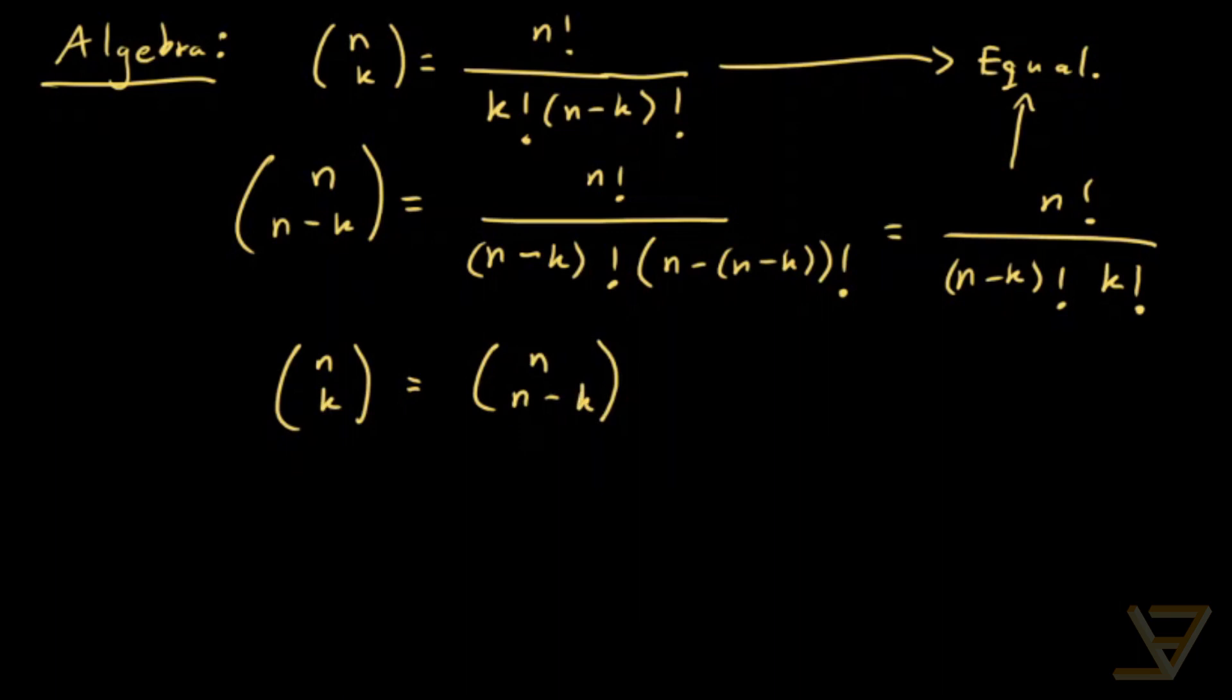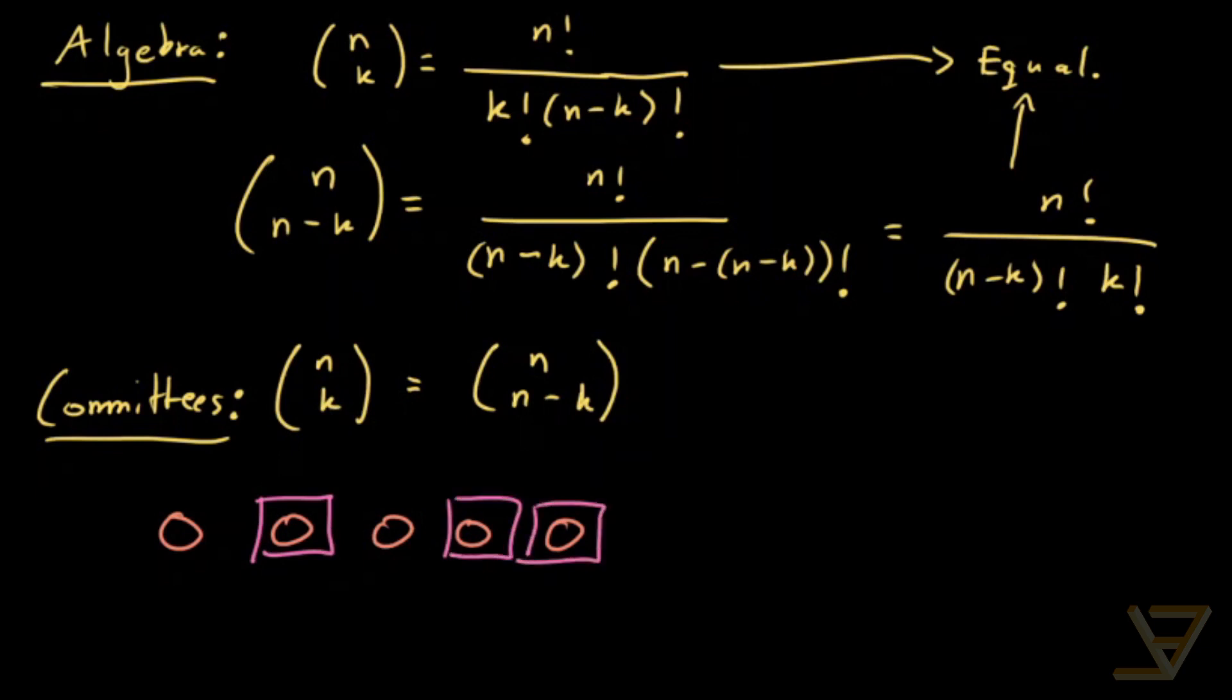So let's think about this in terms of committees. The proof in terms of committees goes like this. Let's say we have n objects. So we've got one, two, three, four, let's say five objects. And we want to pick three of them. So picking three of them might look something like this, the ones in the pink boxes. And there are n choose k ways of doing it.